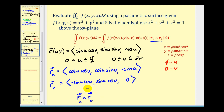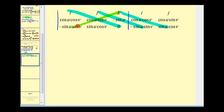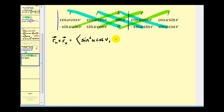Now we'll determine the cross product of these two partial derivative vectors by evaluating a three-by-three determinant. I'll use the diagonal method — I've already set that up to save time. Summing the products of the blue diagonals and subtracting the products of the green diagonals, the cross product comes out to: sine squared u cosine v, sine squared u sine v, and sine u cosine u. You may want to pause the video and verify this.